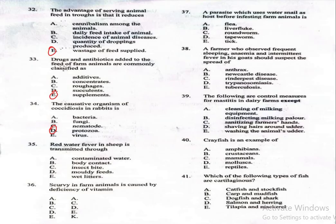Question 35: Red water fever in sheep is transmitted through A, contaminated water; B, body contact; C, insect bite; D, muddy feet; E, wet litter. The correct answer is insect bite, which is option C. It is usually spread by ticks and causes red-coloured urine, hence the name red water fever.